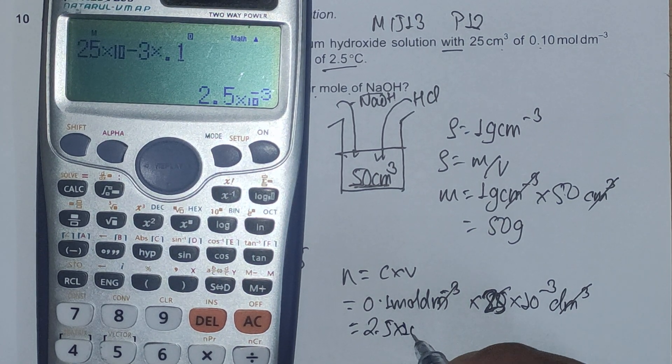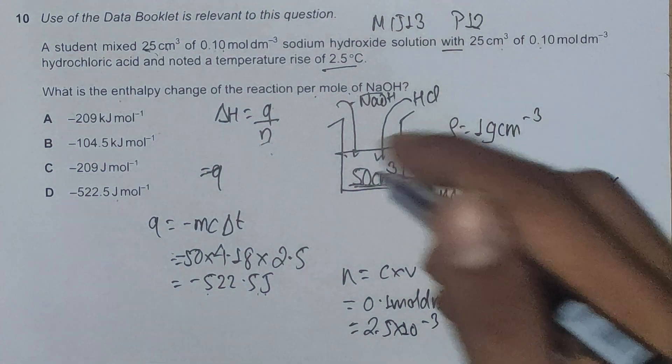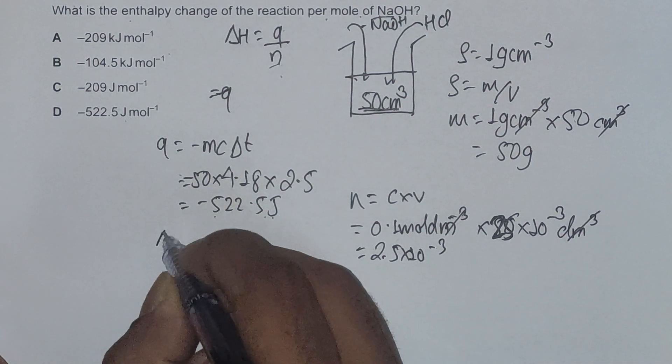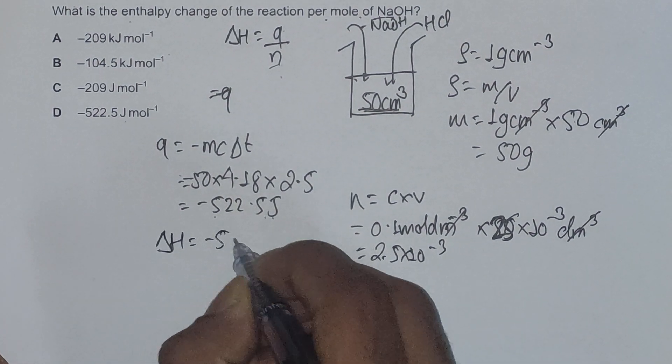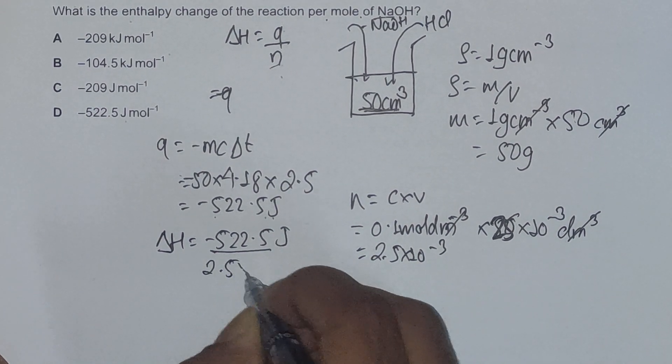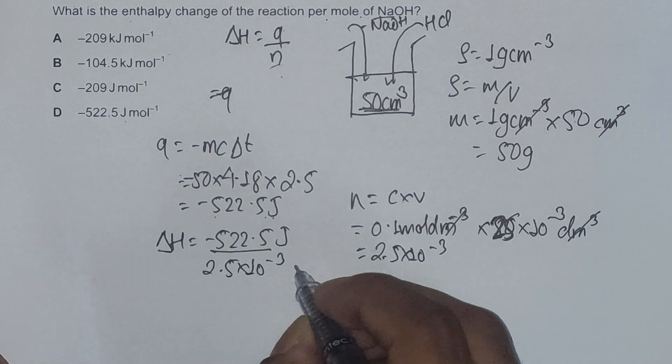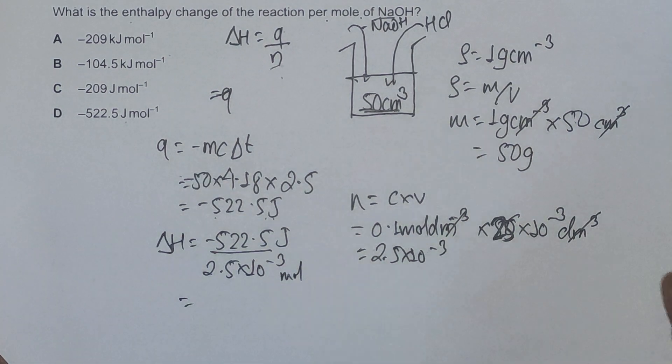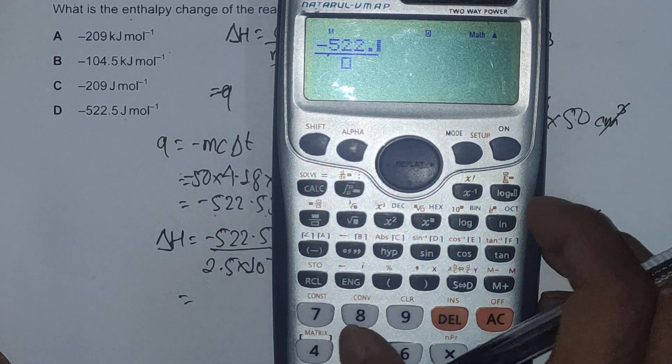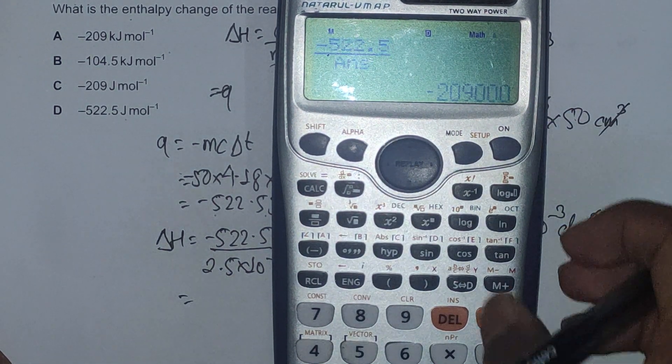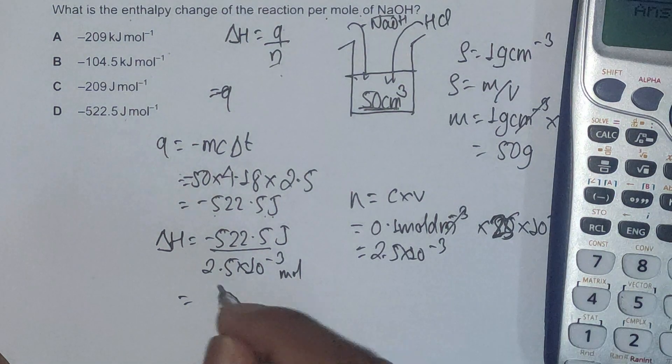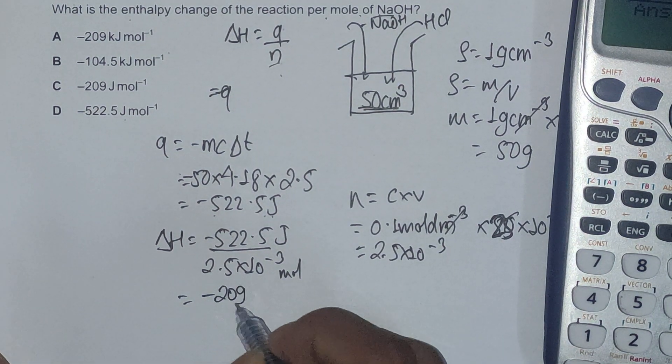Now if we just plug in the values into our formula, we have delta H as negative 522.5 joules divided by 2.5 times 10 to the minus 3 moles. Calculating this gives us negative 522.5 divided by 2.5 times 10 to the minus 3, which equals negative 209,000 joules per mole.